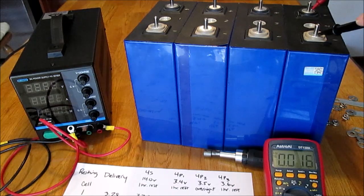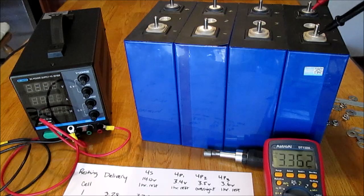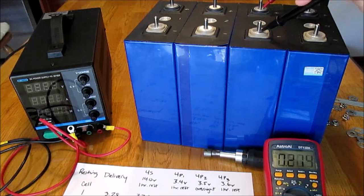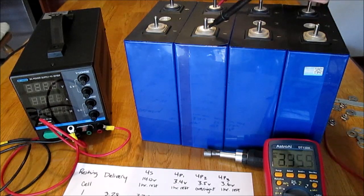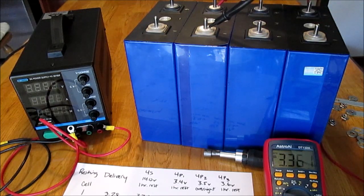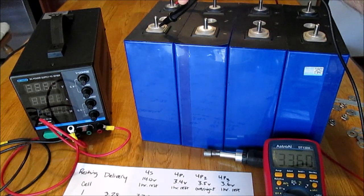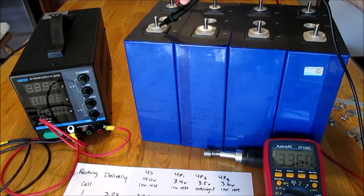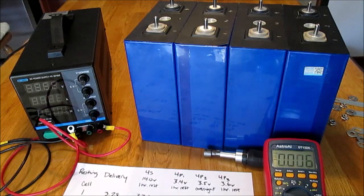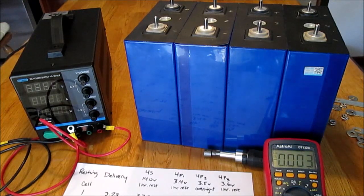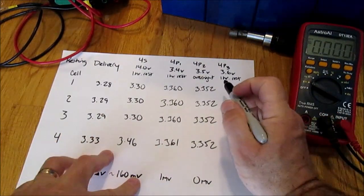So here we go, let's start with cell number four. We're going to be going in reverse order. Cell number four was the high one, it's reading 3.362. Cell number three 3.361. Cell number two 3.361. And cell number one 3.361, just teetering on 3.361.